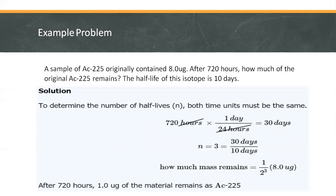Now back to this example. We have n equals 3. So how much actinium is remaining? Using the formula, let's multiply 8 by the fraction remaining. So after 720 hours, we have 1 microgram remaining.